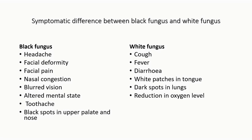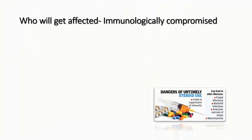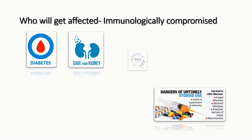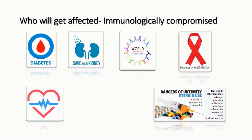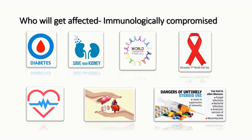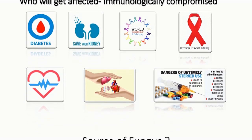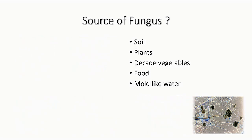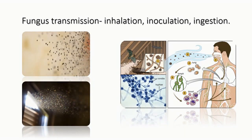For white fungi, you can see cough, fever, diarrhea, white patches on the tongue, dark spots in the lung X-ray, and reduction in the oxygen level. Fungus loves sugar, and with the high blood sugar of uncontrolled diabetic people, it invites fungal infection. You can also see other issues like renal failure — AIDS patients, cancer patients, cardiac issues, and organ transplantation — all these conditions involve high steroidal use, which makes them susceptible. Sources of fungi include soil, plants, decayed vegetables, food, and mold, and the atmosphere already contains spores of fungus.